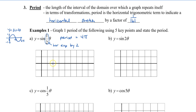We're going to graph this over pi, 2pi, 3pi, and 4pi. Start by graphing the point at 0, which stays at 0 when we stretch. Then graph the last point at the new period, 4pi. Then graph the middle point: half of the distance between 0 and 4pi is 2pi.